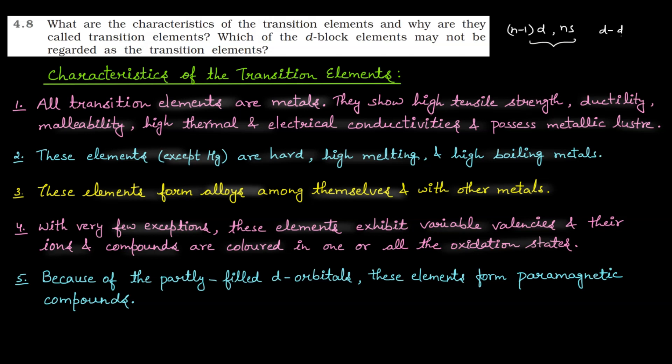They show d-d transitions. Next one is, because of the partly filled d orbitals, these elements form paramagnetic compounds. Paramagnetic compounds means those in which unpaired electrons are present, we call paramagnetic compounds.